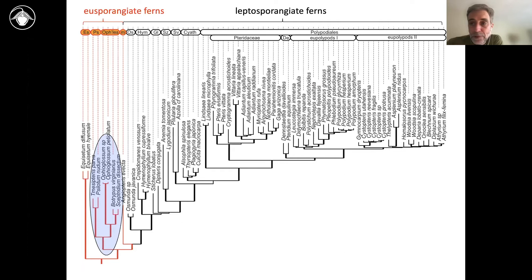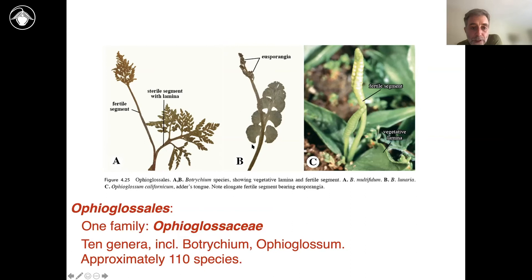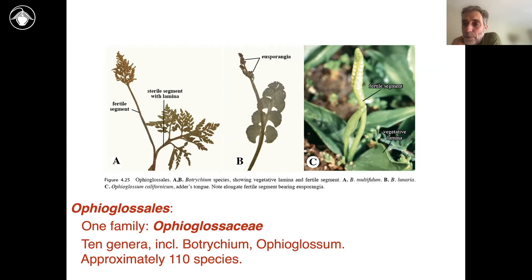The next group has two families: the Psilotaceae and the Ophioglossaceae. I'll start with the Ophioglossaceae, which may be familiar to many people — these are the grape ferns or adder's tongue ferns. They are moderately diverse, with somewhat over 100 species, mostly tropical but also quite a few temperate ones, especially the genus Botrychium, the true moonworts. What's really unusual is that what looks like multiple different leaves is in fact one single leaf divided into a fertile part that bears the eusporangia and a sterile part — it's an example of a dimorphic individual leaf.